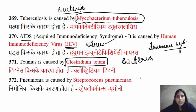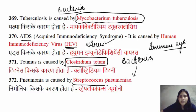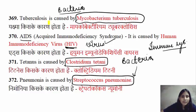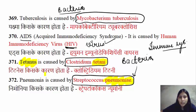Pneumonia is caused by the bacteria called Streptococcus pneumonia. So Streptococcus pneumonia causes pneumonia. And tuberculosis is caused by Mycobacterium tuberculosis.